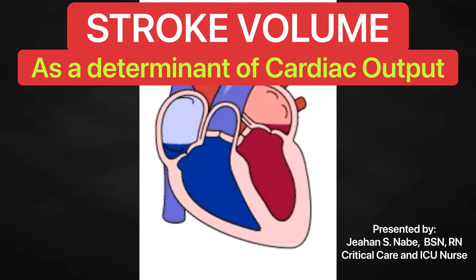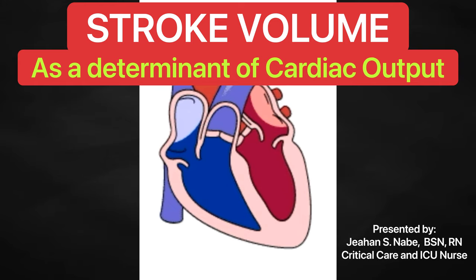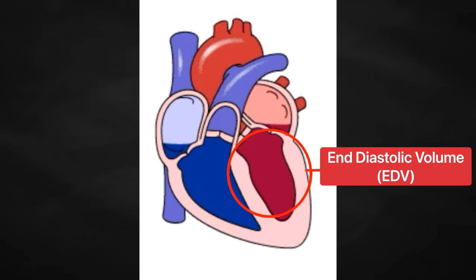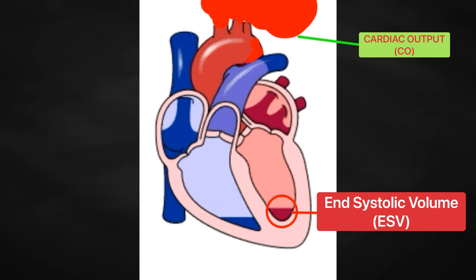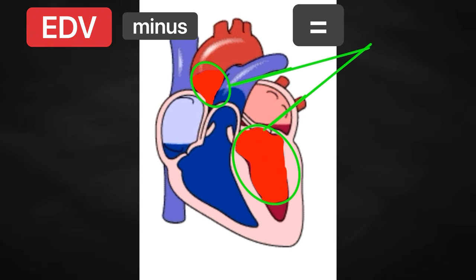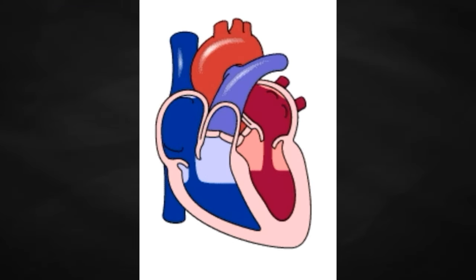Many of the same factors that regulate heart rate also impact cardiac function by altering the stroke volume. While several variables are involved, stroke volume is ultimately dependent upon the difference between end-diastolic volume and end-systolic volume, which I have already discussed in my previous video.